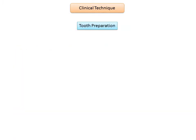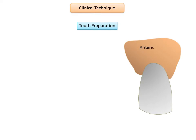The next step is tooth preparation, which will be covered separately for anterior and posterior teeth because cavity design differs based on different classes of caries. First we shall look at cavity preparation for anterior teeth, beginning with class 3 restorations. Class 3 caries is smooth surface caries found on the proximal surfaces of anterior teeth, usually slightly gingival to the proximal contact, and does not involve the incisal edge.